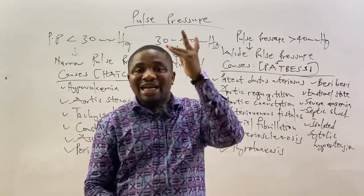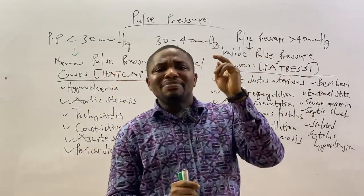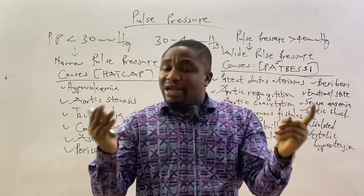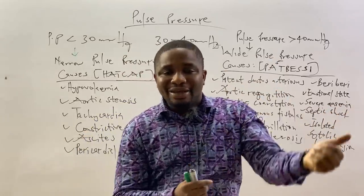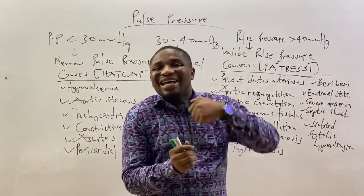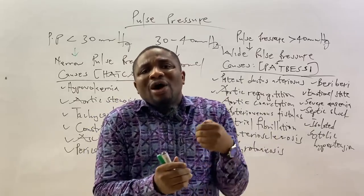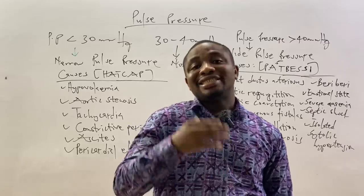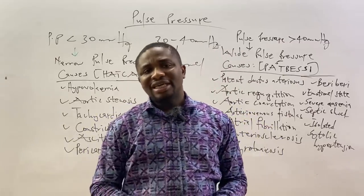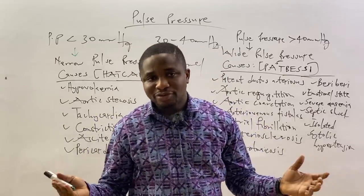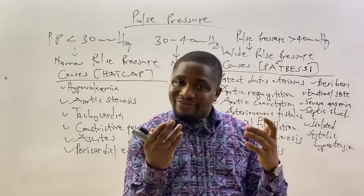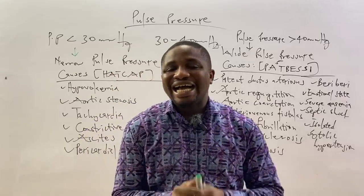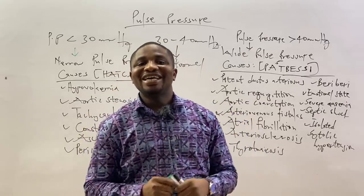Continuing with the five A's: atrial fibrillation, arteriovenous fistulas, aortic coarctation, and arteriosclerosis. Then T is thyrotoxicosis. B is beriberi. E is emotional state. The first S is severe anemia. The second S is septic shock. And I stands for isolated systolic hypertension.